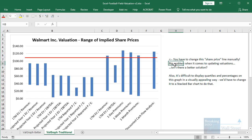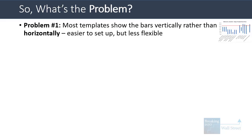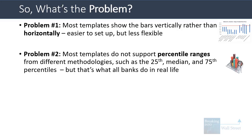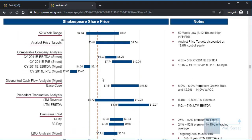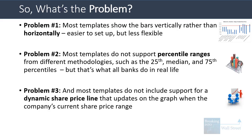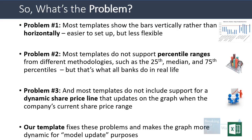It's very easy to create this type of chart. However, this type of chart also has a few downsides. First of all, this one shows the bars vertically rather than horizontally — it's easier to set up like that but it's also less flexible. Also, most templates don't support percentile ranges for different methodologies, so you can't easily see the 25th to median and the median to 75th percentile, or the minimum to 25th percentile, or the 75th percentile to maximum in these types of charts. But banks do that all the time in real life. And then the third problem is that most templates do not include support for a dynamic share price line that updates on the graph when the company's current share price changes.